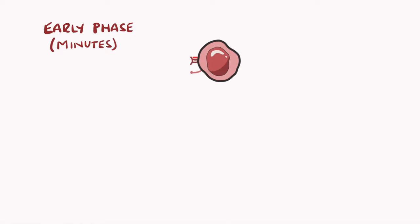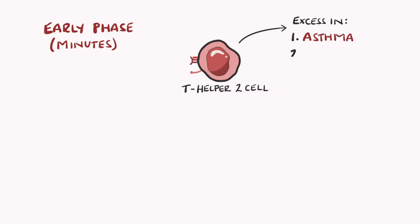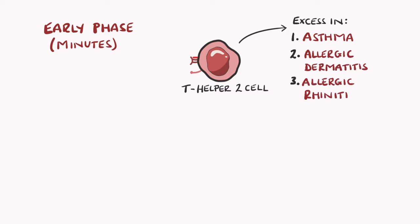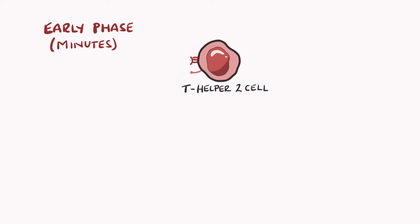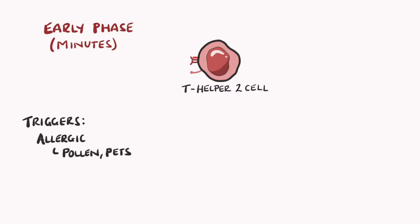The first phase of an asthma exacerbation is the early phase, happening in the first few minutes. In asthma, there is thought to be an excess of T-helper 2 cells. This is also true in allergic dermatitis, known as eczema, and allergic rhinitis, known as hay fever, which is why these three together make up the atopic triad. Allergic asthma is the most common type, triggered by allergy to things like pollen, house dust or mites, and pet antigens.